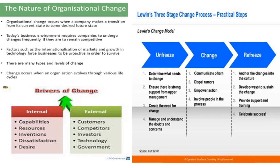Different changes happen in organizations — sometimes they want to merge or diversify their products. These changes are inevitable for organizations to withstand in this competitive world, but resistance also happens. There are external and internal drivers of change. External drivers include competitor performance, customer demand, investor demand, technological updates, and governmental policies. Internal drivers include having better resources, the need to use competitive resources, dissatisfaction with the current level of performance, and wanting to improve or rewire the organization.